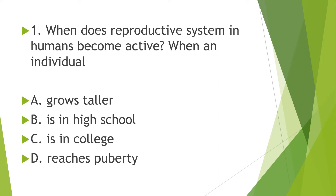When does the reproductive system in humans become active? When an individual: A. grows taller, B. is in high school, C. is in college, or D. reaches puberty.